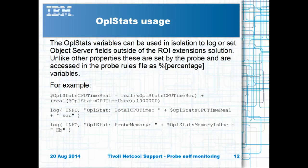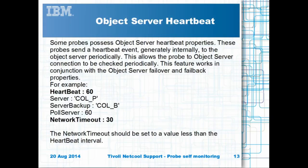Probe logging can be performed whenever a new event is generated, or after a given number of events are generated. As well as the ROI features, there is the probe's heartbeat property, which is set in the probe's property file, and generates a heartbeat event in the object server periodically. It is important to set network timeout as well, otherwise the connection to the object server will never timeout by default, which prevents heartbeats from being sent to the object server or the object server's unavailability being logged. The heartbeat setting should be larger than the network timeout setting.